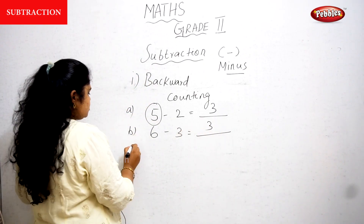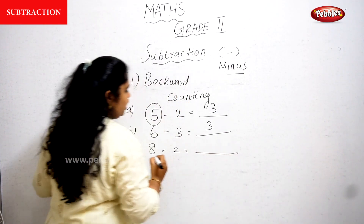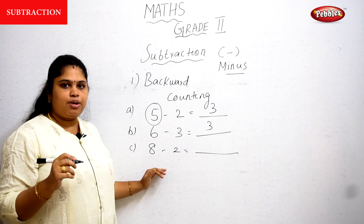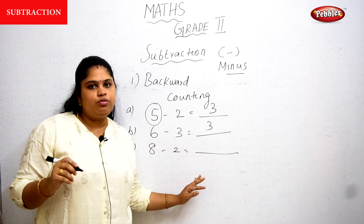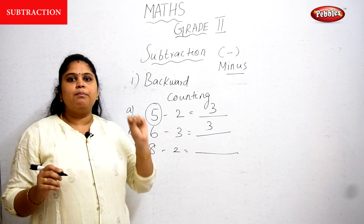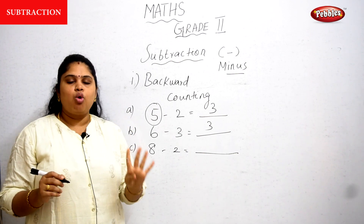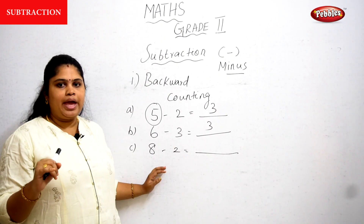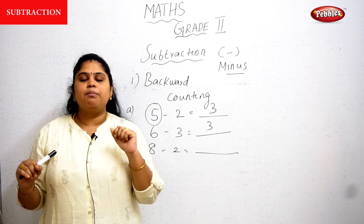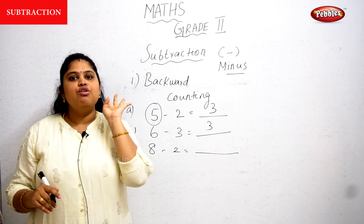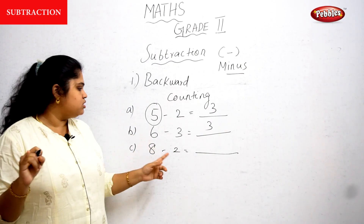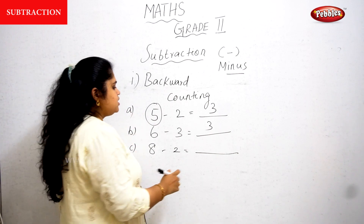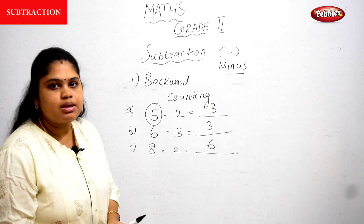Let's do one more: 8 minus 2 equals dash. Start backward counting from 8. Before 8: 7, 6, 5, 4, 3, 2. I stopped at 2 because that is the number. How many fingers did I count? Six fingers. So the answer is 6.